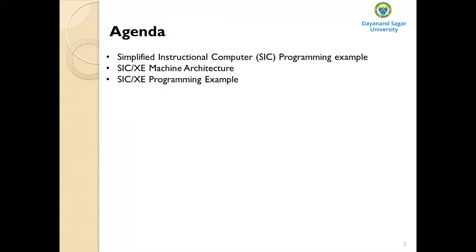Addressing modes are the different ways by which you can access data stored in a register or memory. The standard version of SIC has two addressing modes indicated by setting the flag bit X. If X equals 0, it is direct addressing; if X equals 1, it is index addressing. In direct addressing, the target address equals simply the address field. In index addressing, the target address equals the address field plus the content of the index register.